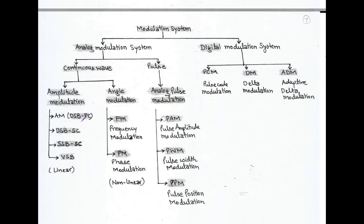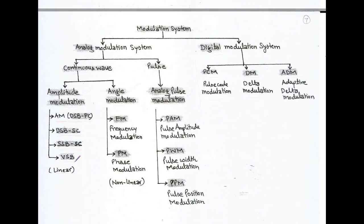Our first topic in analog modulation is amplitude modulation, which is a linear process. In short we call it AM or standard AM. Standard AM is called double sideband full carrier, abbreviated DSBFC. Further classifications of AM are: double sideband suppressed carrier (DSBSC), single sideband suppressed carrier (SSB-SC), and vestigial sideband (VSB). These are the four types of amplitude modulation, with standard AM being double sideband full carrier.